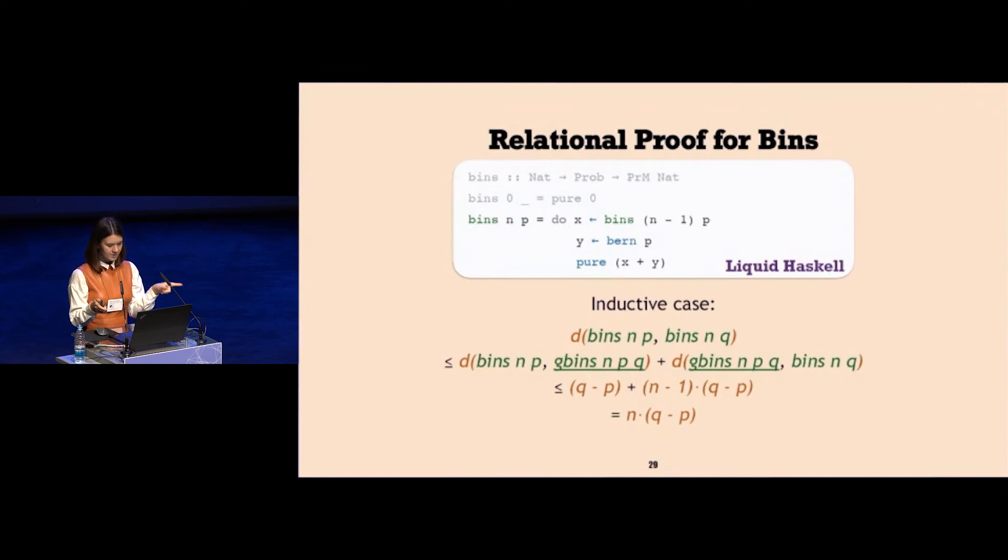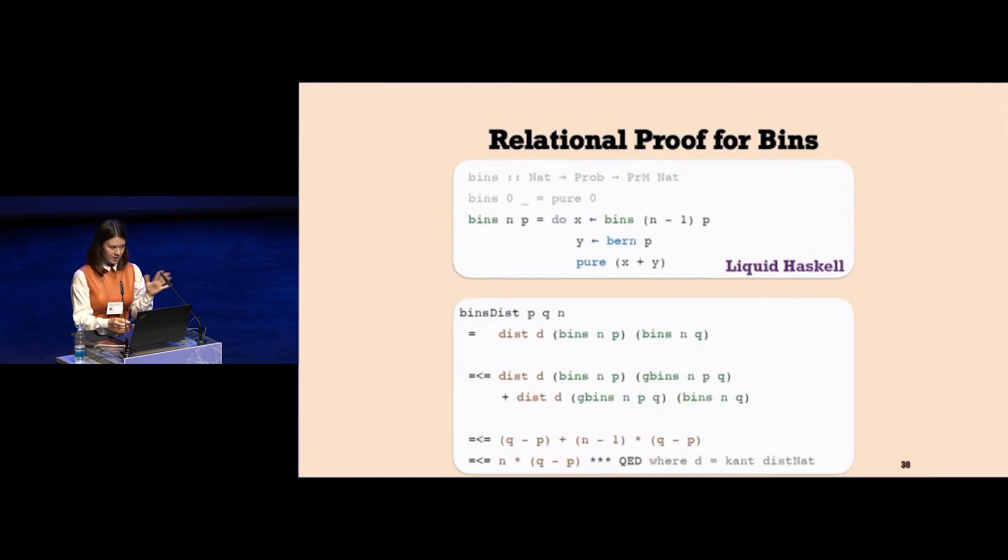Mathematically, it would be called a triangular inequality. I apply it in the first line with some ghost function, then estimate the distance bounds for two components, and the result is the boundary that I expected. It translates to liquid Haskell almost literally using the operators for inequality. It's equal less equal, and I can also supply the auxiliary statements such as the triangular inequality, which we have for distance class, and theorems about left comparison and right comparison with a question mark.